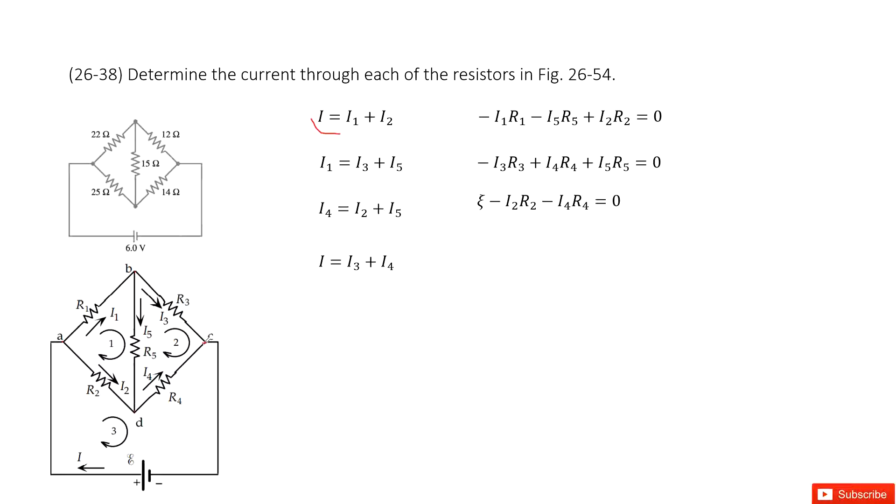Then look at position C. We can see the current flows in I3 and I4, flows out I. So there we can list the four equations by these four points. Now, next one,